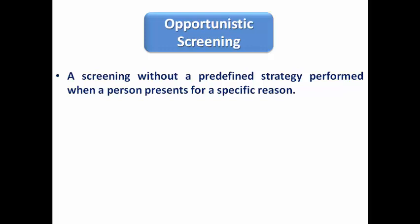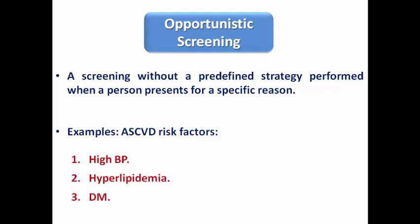For example, a person may come because of chest pain, shortness of breath, or elevated blood pressure. At that time, I screen this person for the presence of risk factors of atherosclerotic cardiovascular disease, such as high blood pressure, hyperlipidemia, or diabetes. I take the chance that this person attended the healthcare facility in order to screen them for risk factors — that is why it is called opportunistic screening.